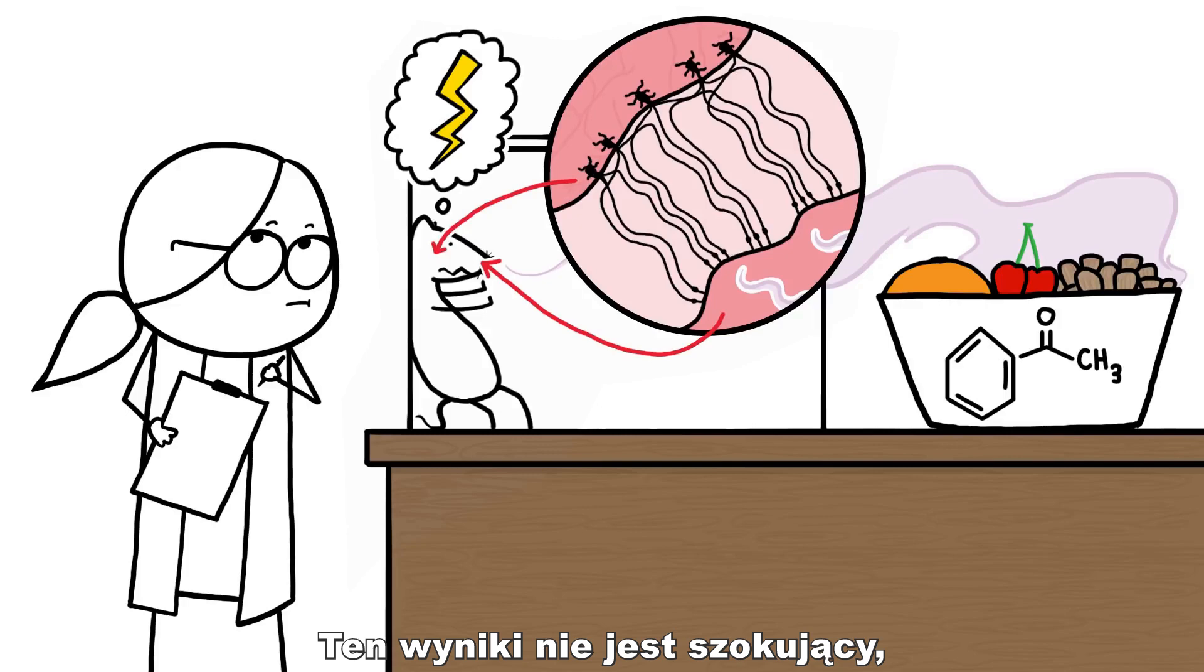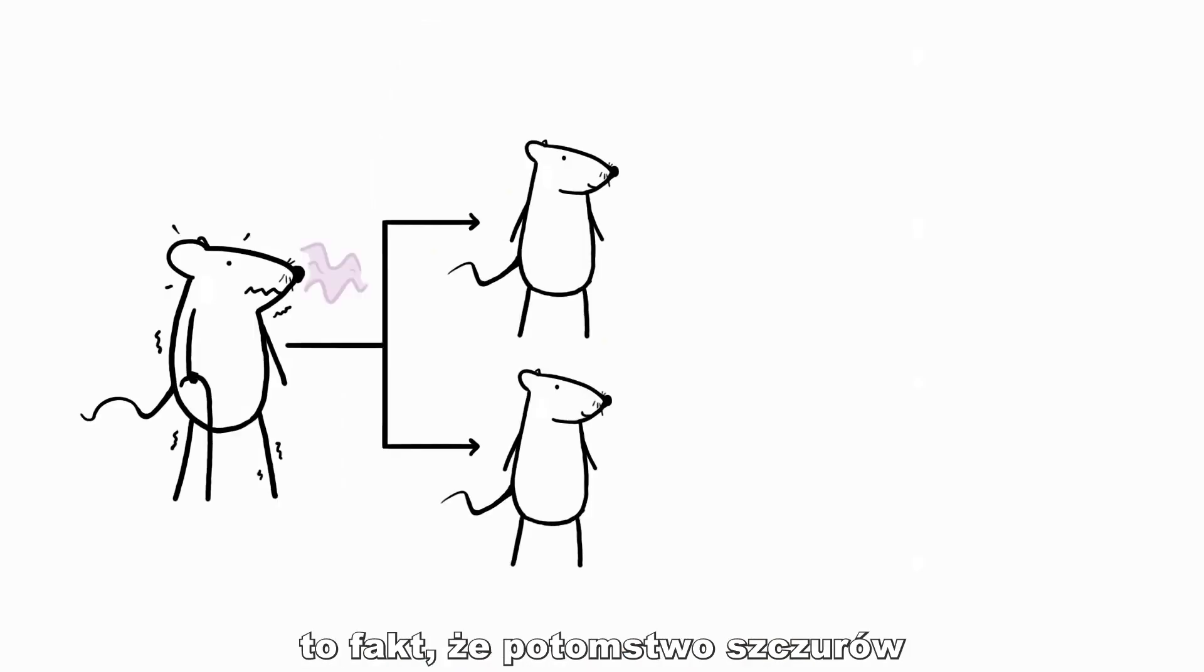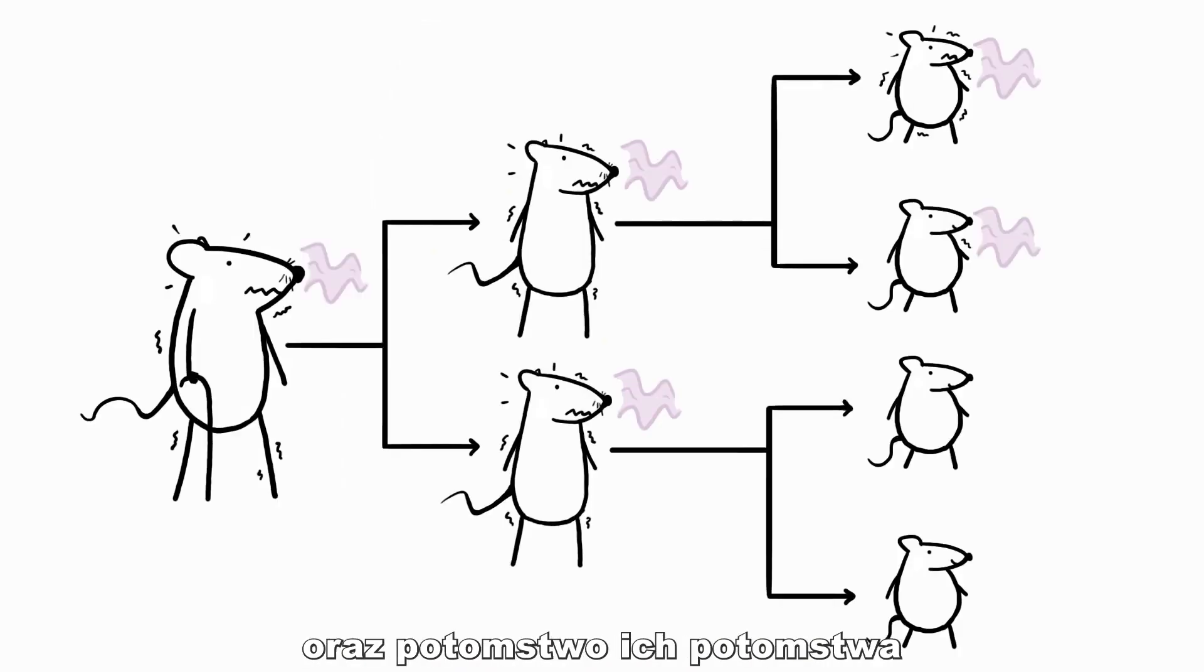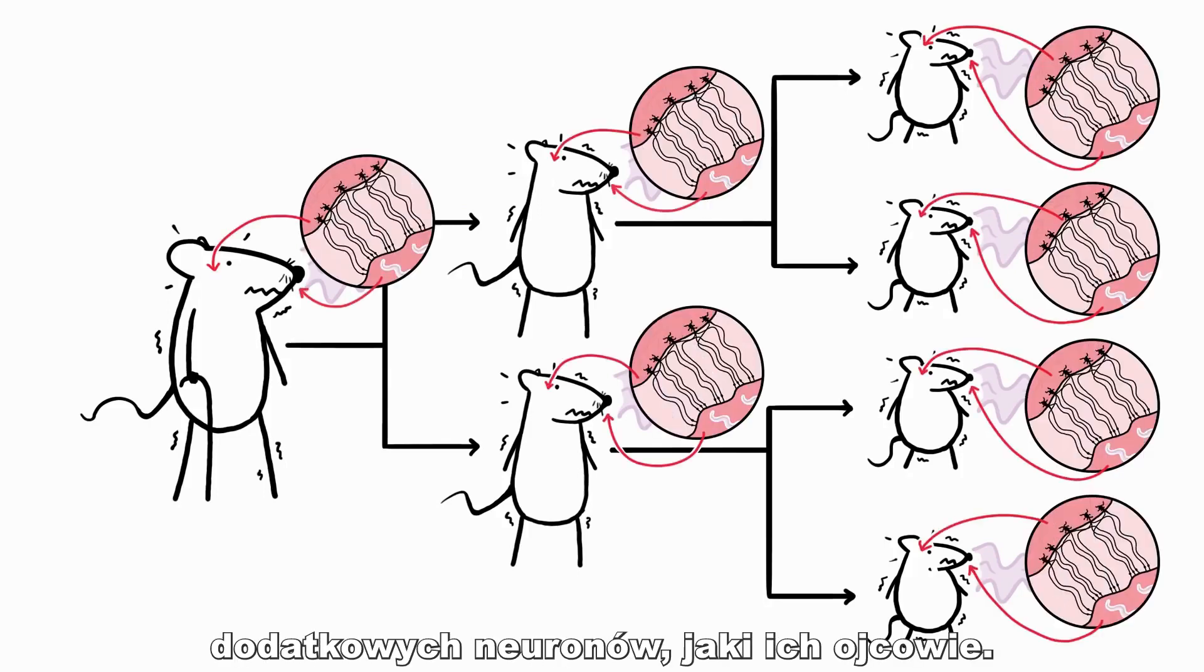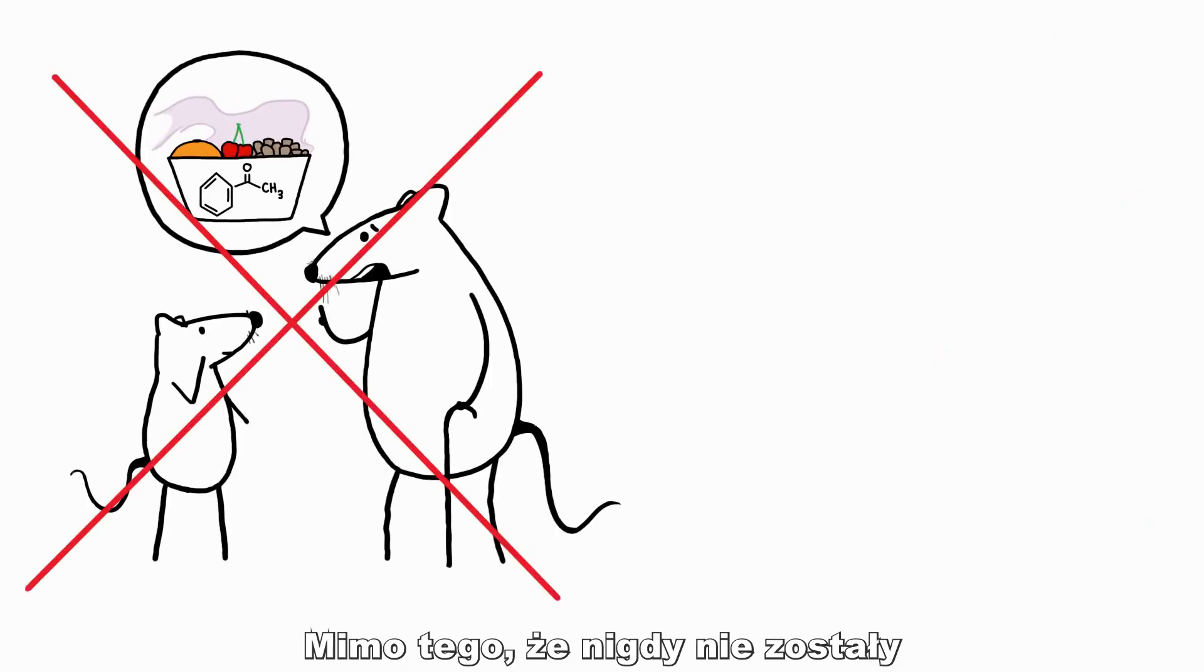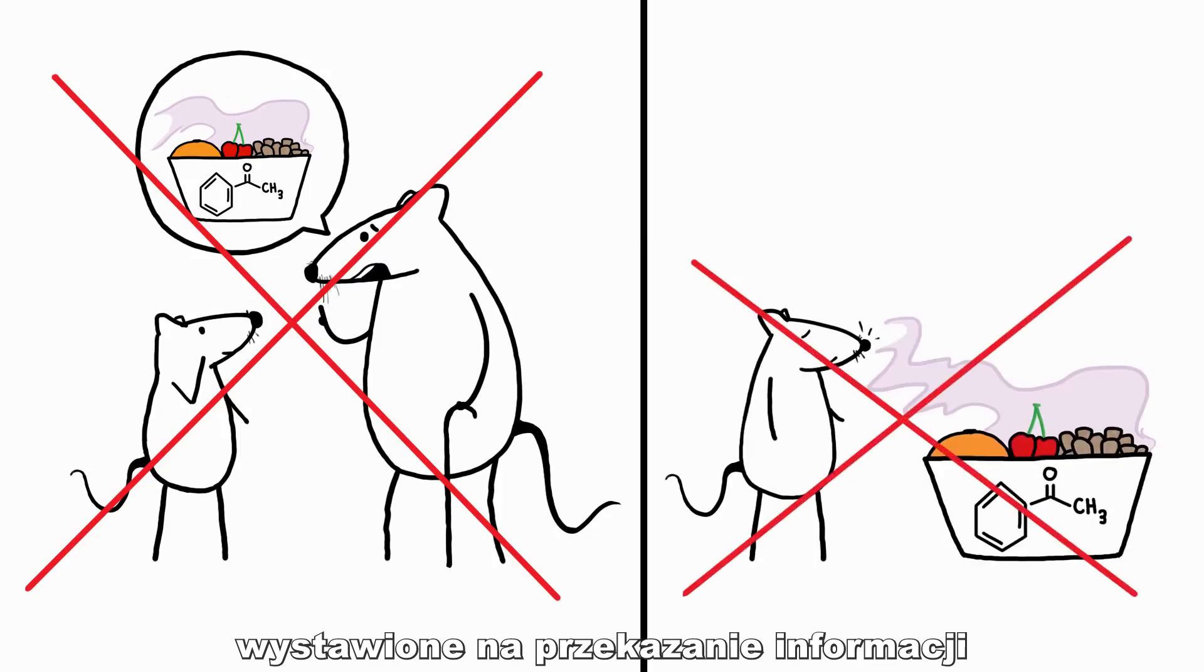This result isn't shocking. What is surprising is that the rats' pups and their pups' pups were also startled by the smell of acetophenone and had the same extra neurons as their fathers, despite never having been introduced to either their dads or the fruity scent before.